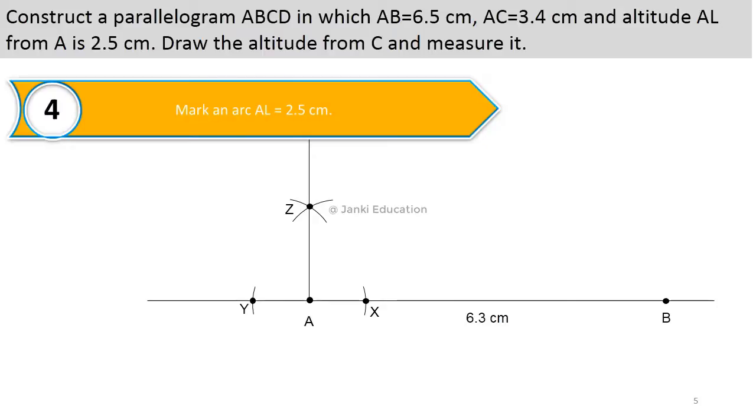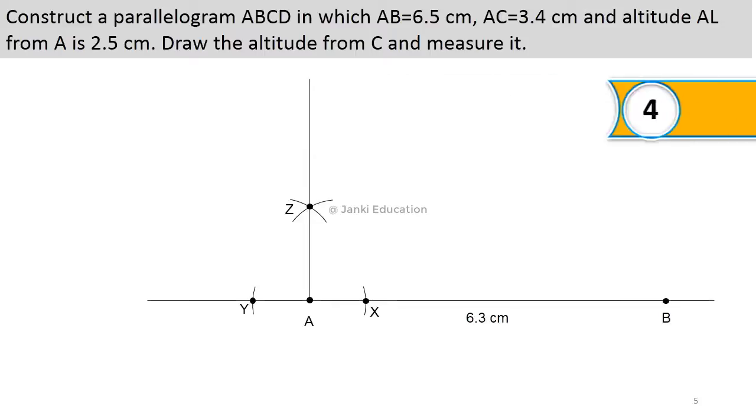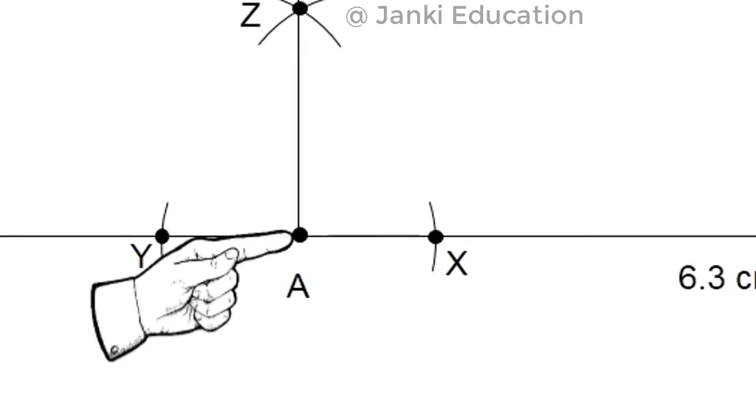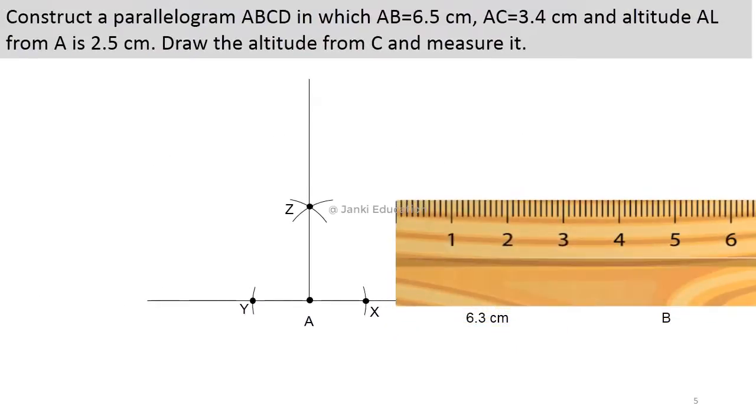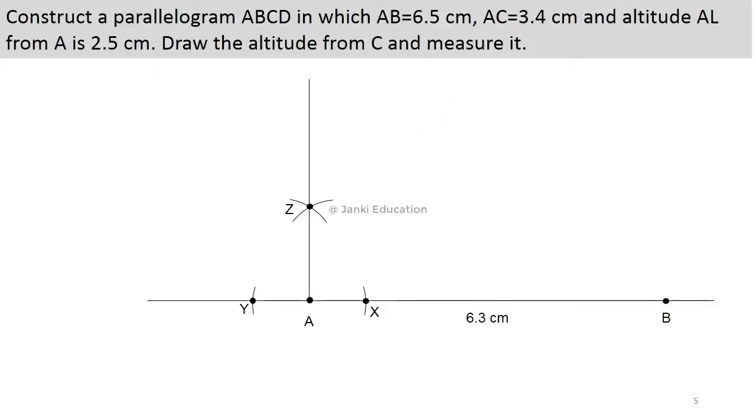Here AL is actually the measurement of altitude given to us from point A. So we will be taking again a ruler and marking an arc from this point A. We will take my measurement of 2.5 cm, and like this, this is our altitude.